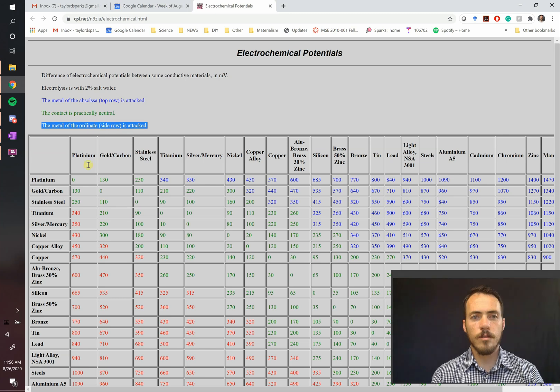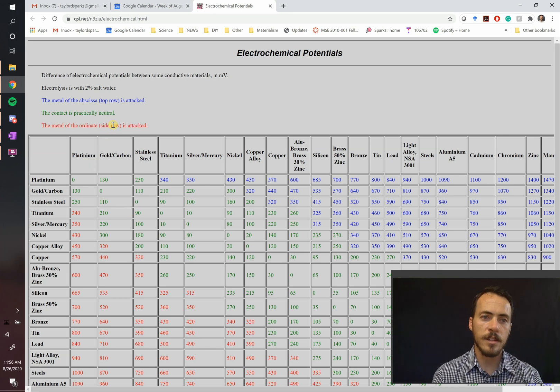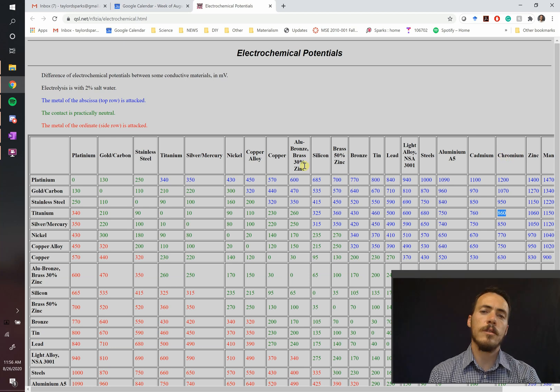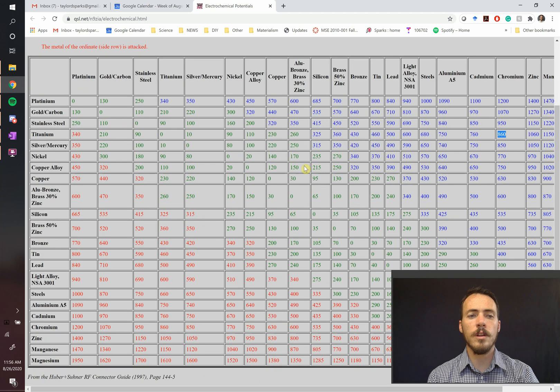But right over here, the metal of the ordinate side, the side row, if they're red, then it's going to be attacked. Like if you took lead and put it together with titanium, then you're generating 460 millivolts. That's a half a volt, basically. So there's a half a volt of electrochemical potential between that, meaning it's probably going to corrode your tin. Or if you took titanium and you put it together with chromium, then you're also going to generate almost a volt of energy. And so you're going to attack the chromium in this case. So these sort of electrochemical potential tables are pretty valuable as engineers.